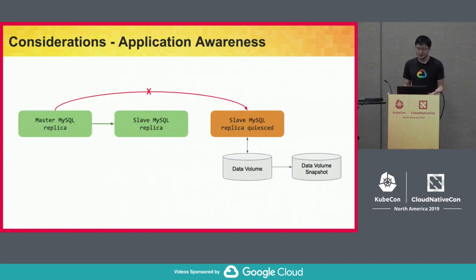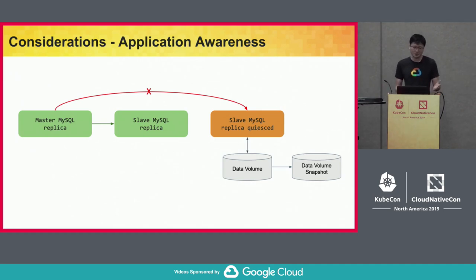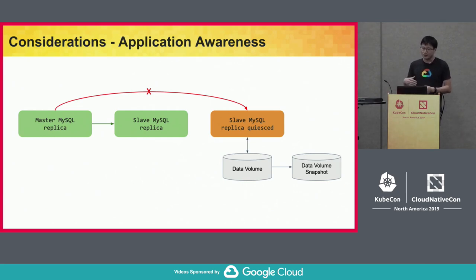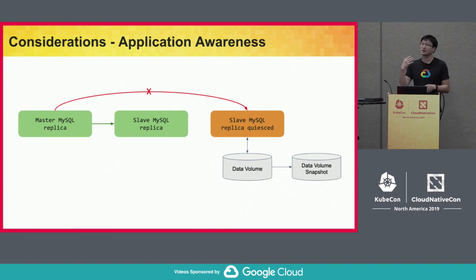Here's an example using a MySQL cluster. Assuming you have one master and two slave replicas, you find a way to identify the secondary replica with the least replication lag and use that to do the volume-level snapshot.